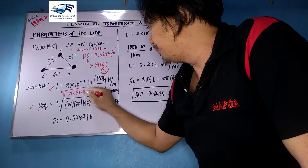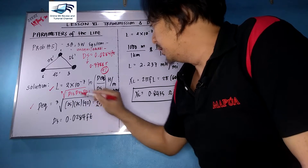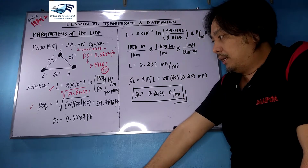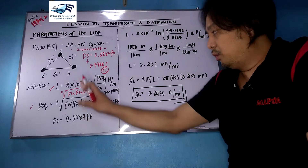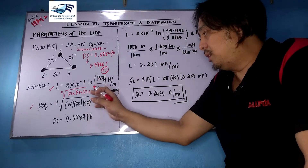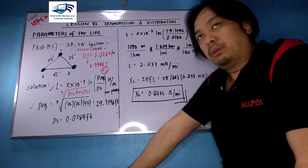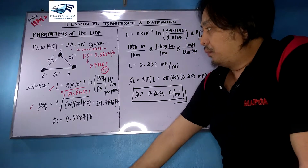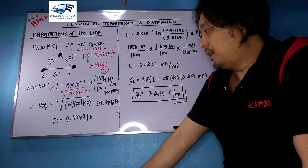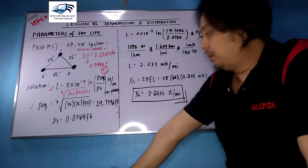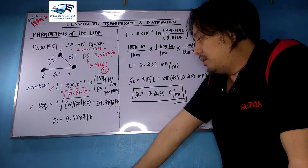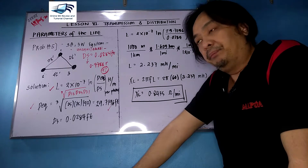We need to get D_eq first. From our last lecture, D_eq equals the cube root of D12 times D23 times D31. So we have the cube root of 25 times 25 times 42, raised to one-third. The answer is 29.7196 feet.